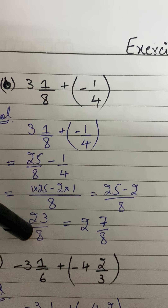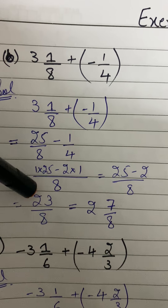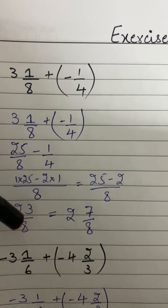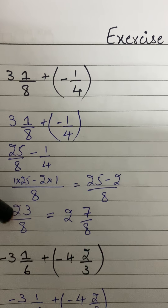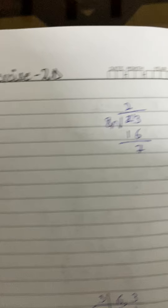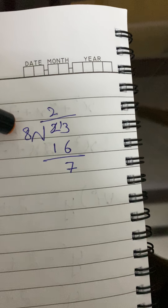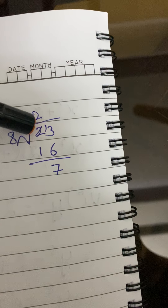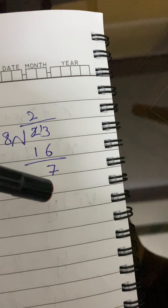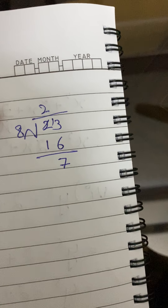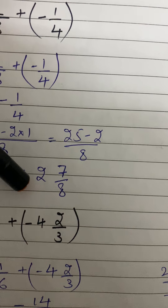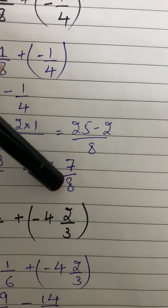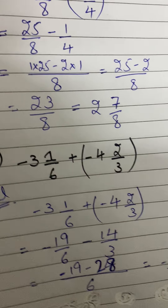We have an improper fraction 23 over 8, so we change it to a mixed number. Dividing: 8 twos are 16, carry gives 13, 13 minus 6 is 7. The quotient is 2, remainder is 7, divisor is 8. So the answer is 2 whole 7 over 8.